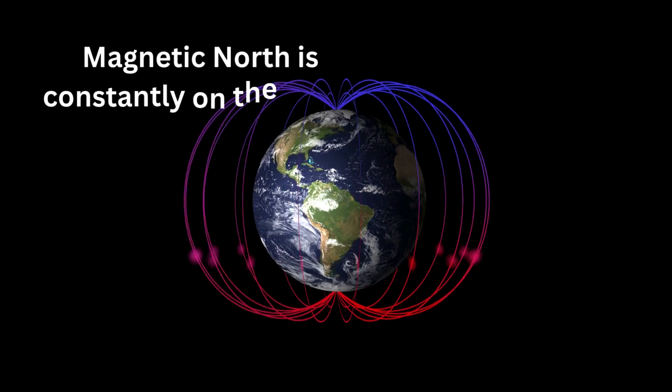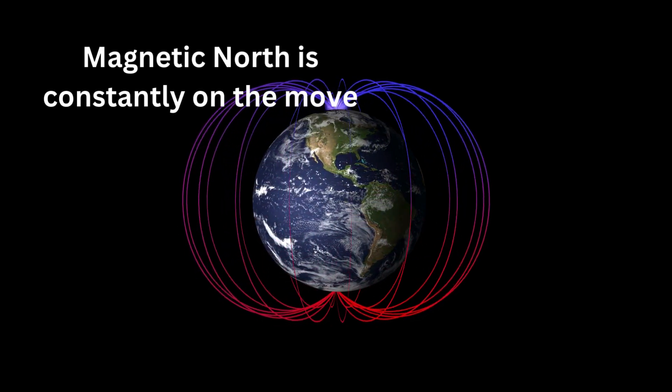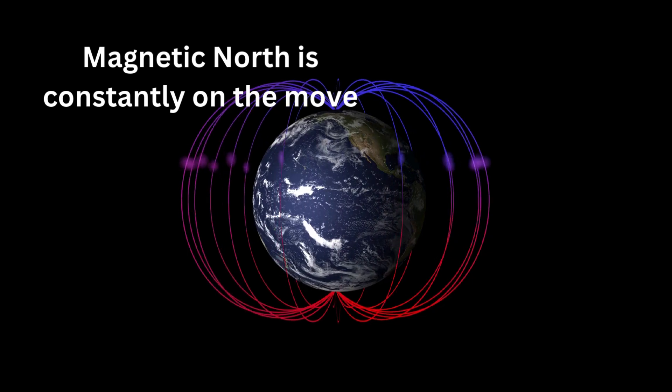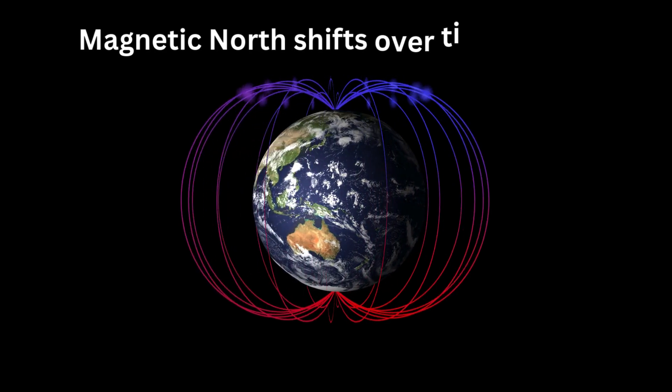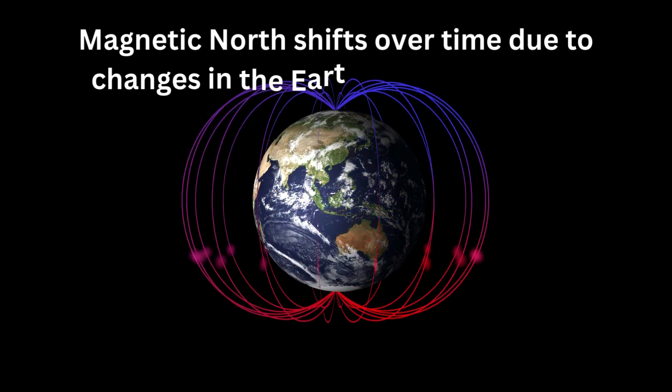Did you know that Magnetic North is constantly on the move? That's right! Unlike True North, which is fixed at the North Pole, Magnetic North shifts over time due to changes in the Earth's magnetic field.